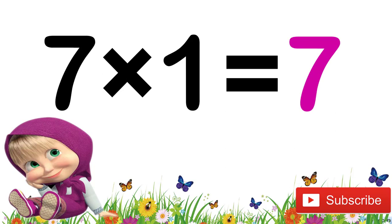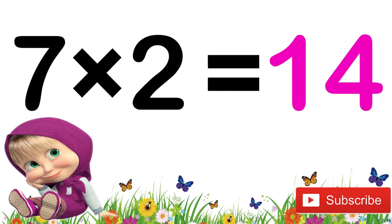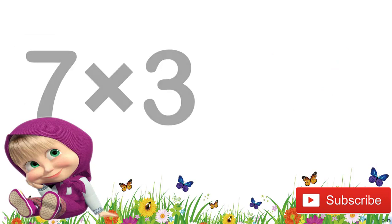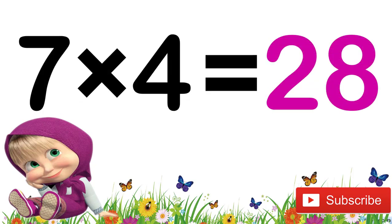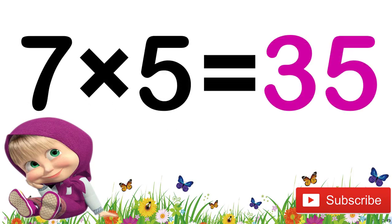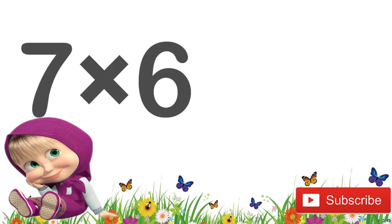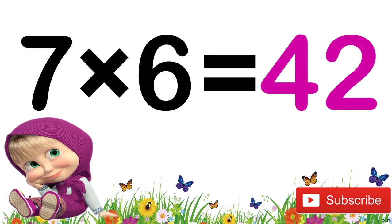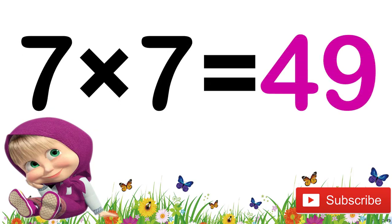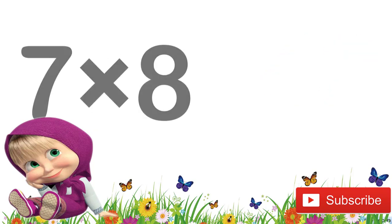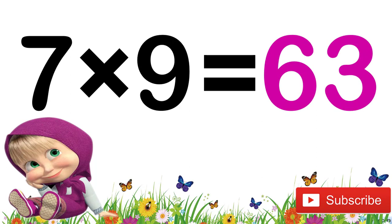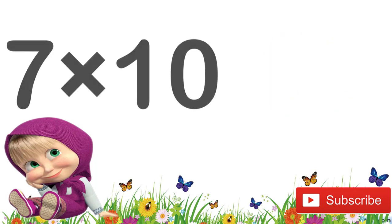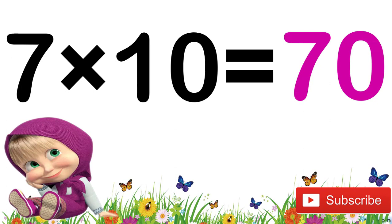Now let's revise again children. 7 ones are 7. 7 twos are 14. 7 threes are 21. 7 fours are 28. 7 fives are 35. 7 sixes are 42. 7 sevens are 49. 7 eights are 56. 7 nines are 63. 7 tens are 70.